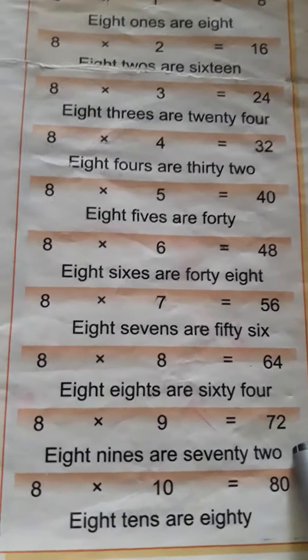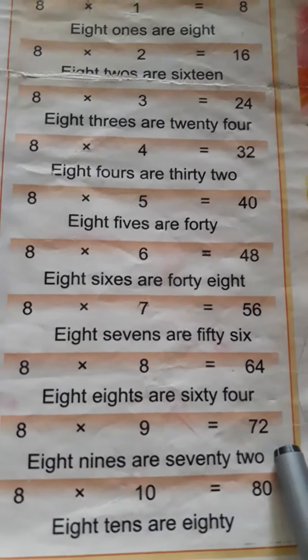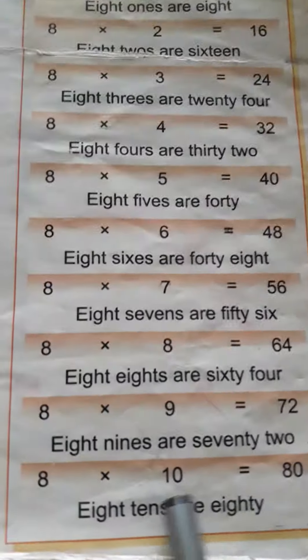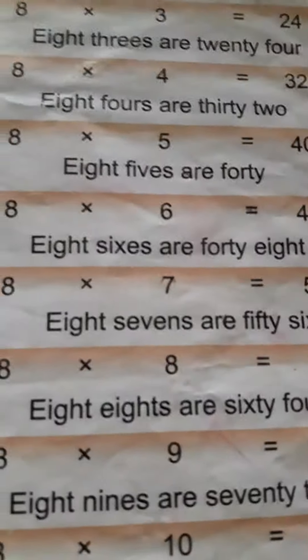Eight nines are seventy-two. Eight nines are seventy-two. Eight tens are eighty. Eight tens are eighty.